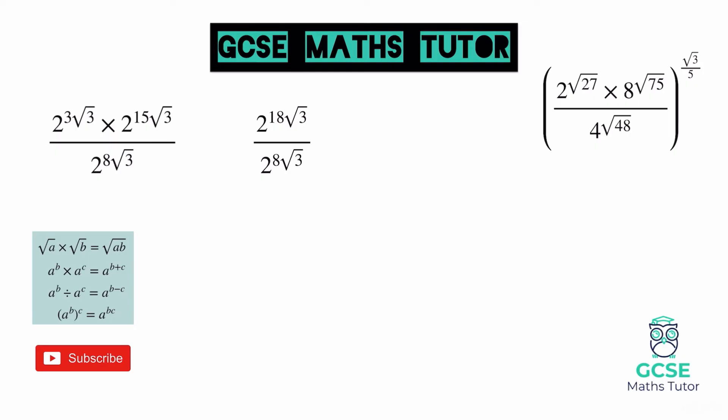Now we have the same base numbers on the top and the bottom as well. We can now divide the powers, so we're going to take them away from each other. So 18 root 3 take away 8 root 3 would leave us with 10 root 3. So we have 2 to the power of 10 root 3. Right, that's fully simplified now. So we've got everything inside the brackets down to the point where it says 2 to the power of 10 root 3.